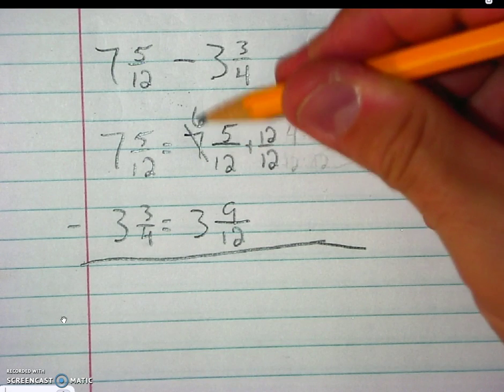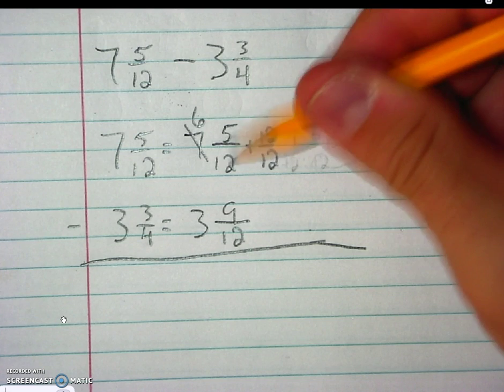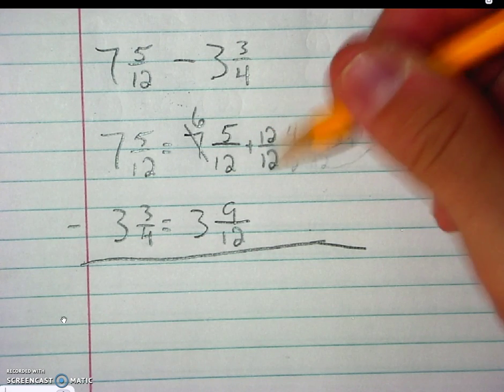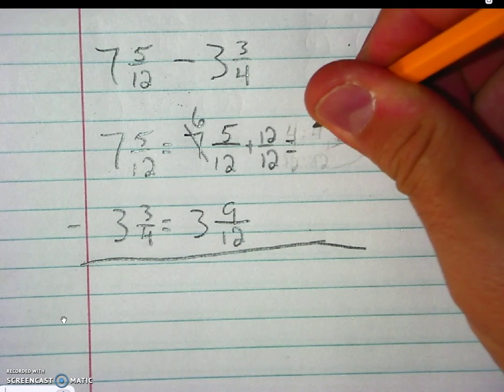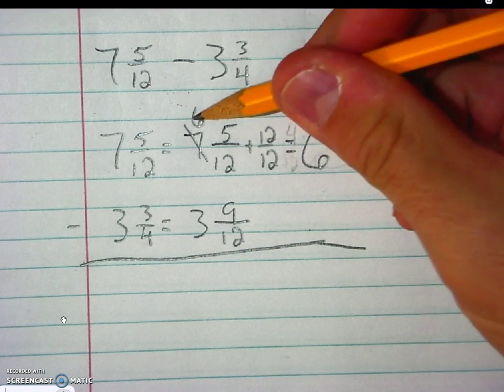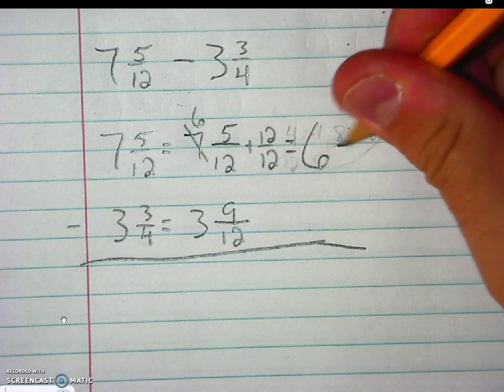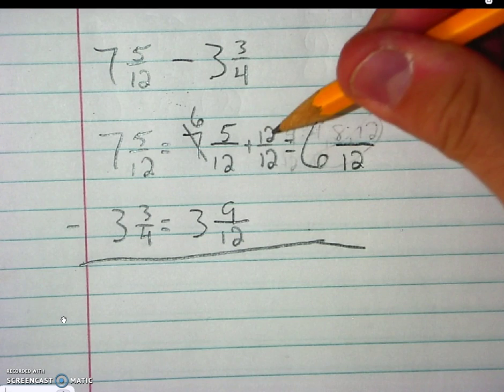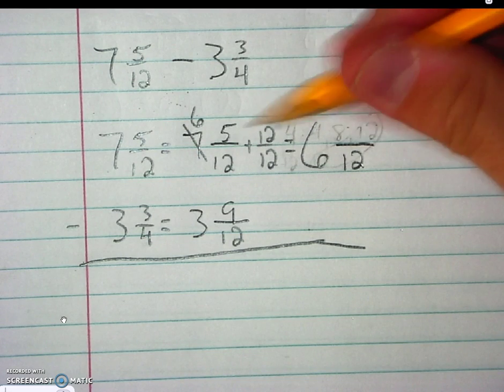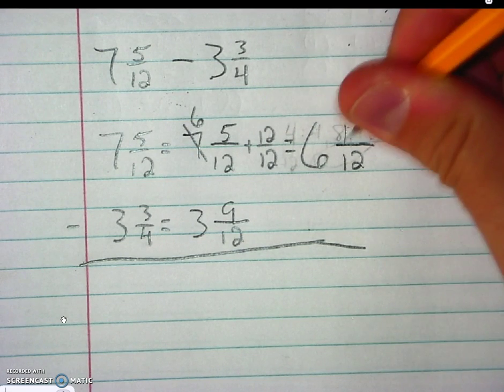I borrowed the one from here. I'm adding it to this fraction as 12 twelfths. My new mixed number will be 6. My denominators are the same, so it stays the same. And 5 plus 12 is 17.